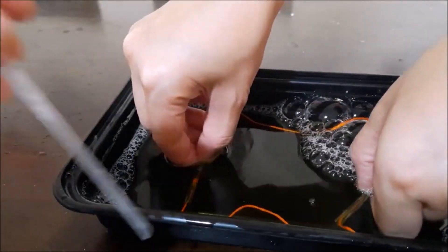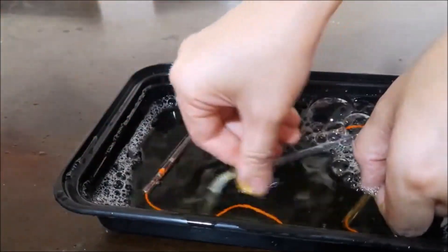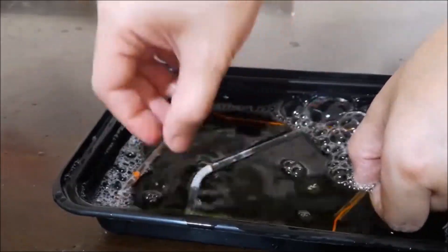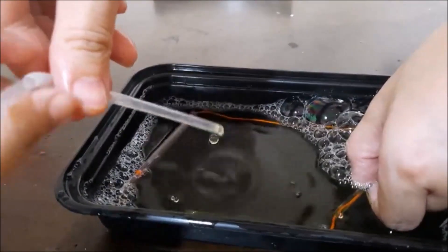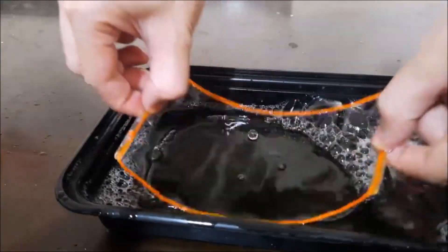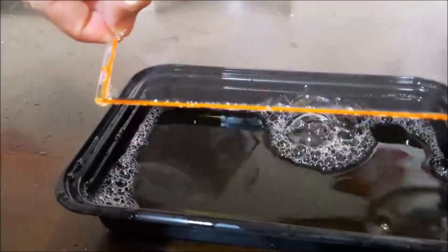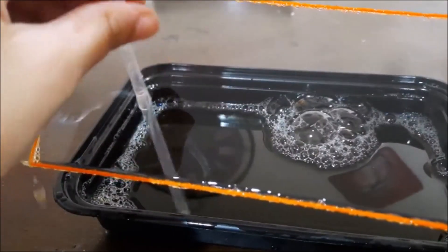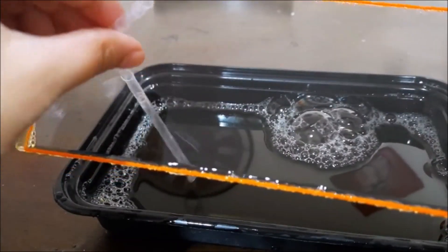Now let's try it. If we soak the straw in the bubble solution, let's see what will happen. The straw passes through the bubble membrane without a problem.